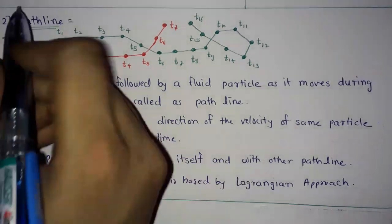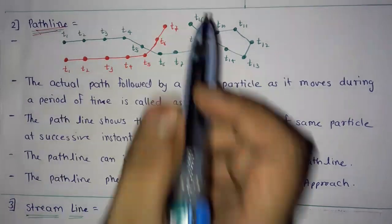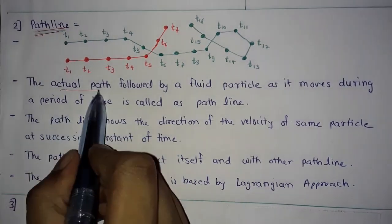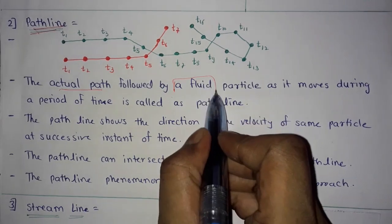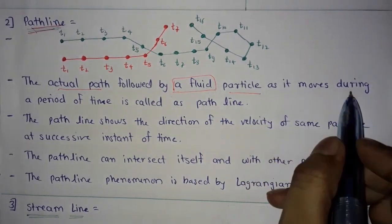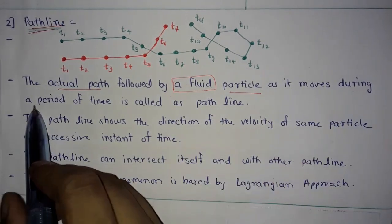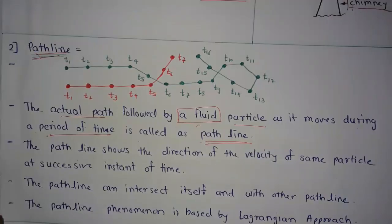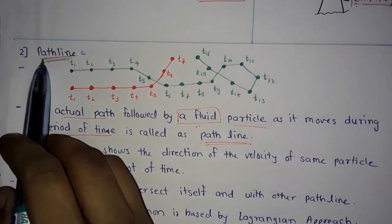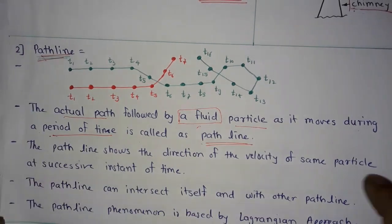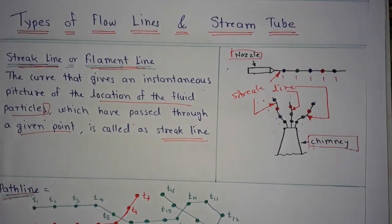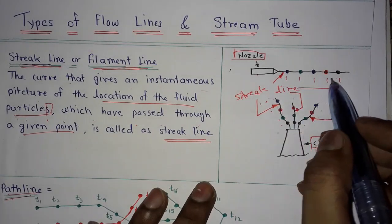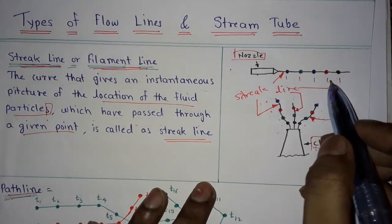Next is path line. The actual path followed by a fluid particle as it moves during a period of time is called a path line. We will understand the path line concept with the help of an example, using colored smoke particles.